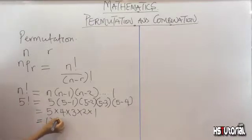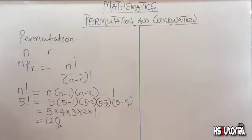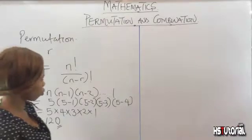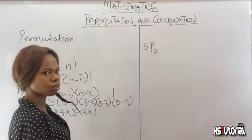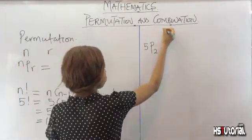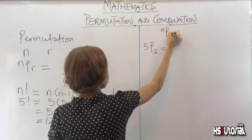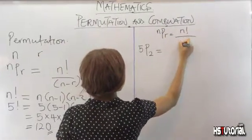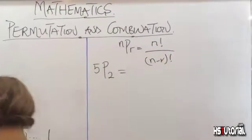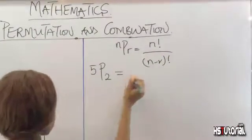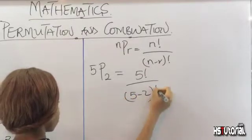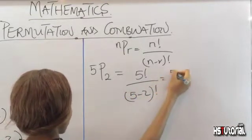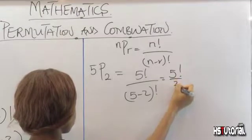5 factorial equals 120. Now what if you're given the question 5 permutation 2? Remember the formula: n permutation r is simply n factorial over (n minus r) factorial. So 5 permutation 2 gives us 5 factorial over (5 minus 2) factorial, which is 5 factorial over 3 factorial.